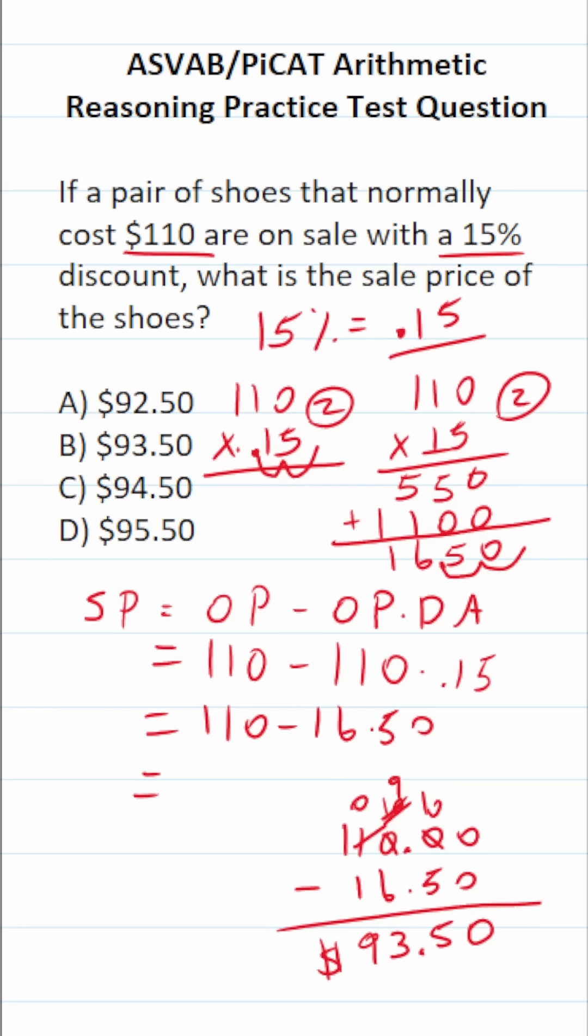So we can see that the sale price of these shoes with a 15% discount is going to be $93.50. So this one is B, of course.